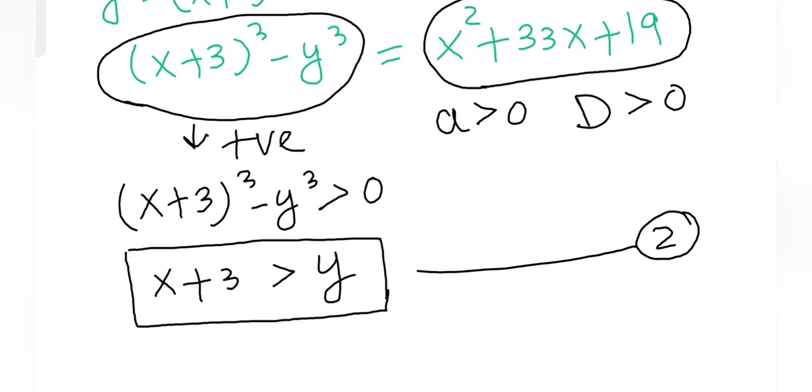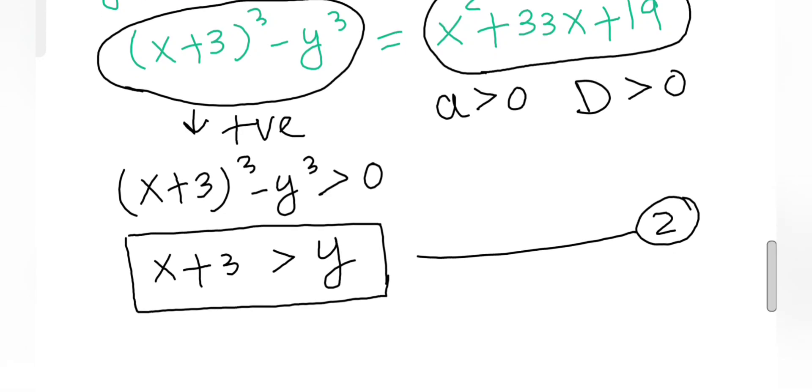Now from equations 1 and 2, we can conclude that y is between x+1 and x+3. The only thing it can be is y equals x+2. So we have to substitute y = x+2 in our original equation.